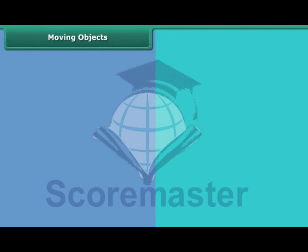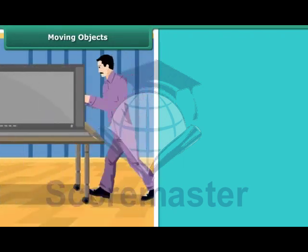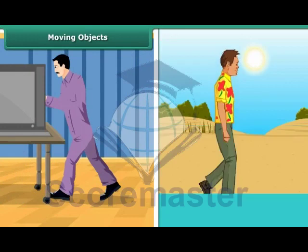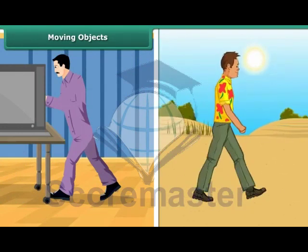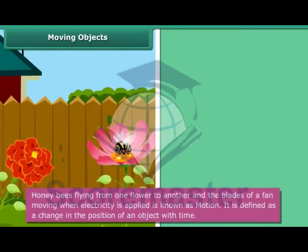Moving Objects. You will notice that there are objects that move when you apply force or are moving on their own. For example, you will see honeybees flying from one flower to another. So also, you will notice that the blades of a fan move when electricity is applied.